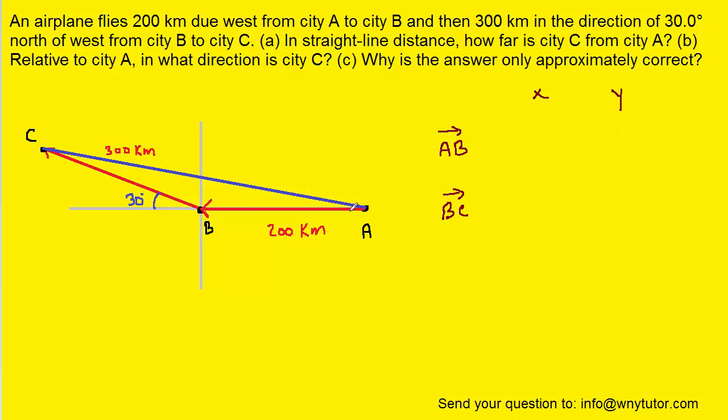We can see that vector AB lies exactly along the x direction, so the entire 200 kilometers will be the x component. It's pointing to the left, so we have to make sure we call that negative 200 kilometers. There will be no y component because the vector points exactly along the x axis.